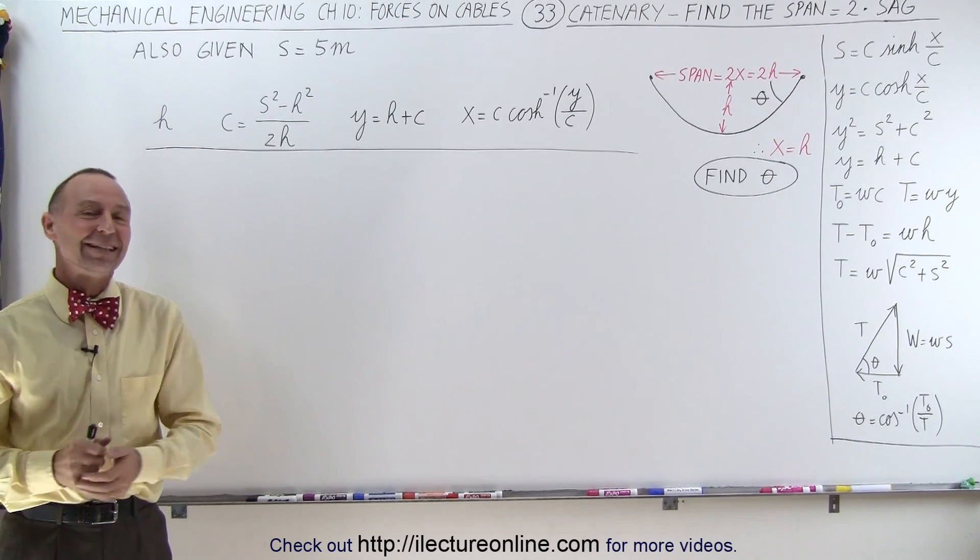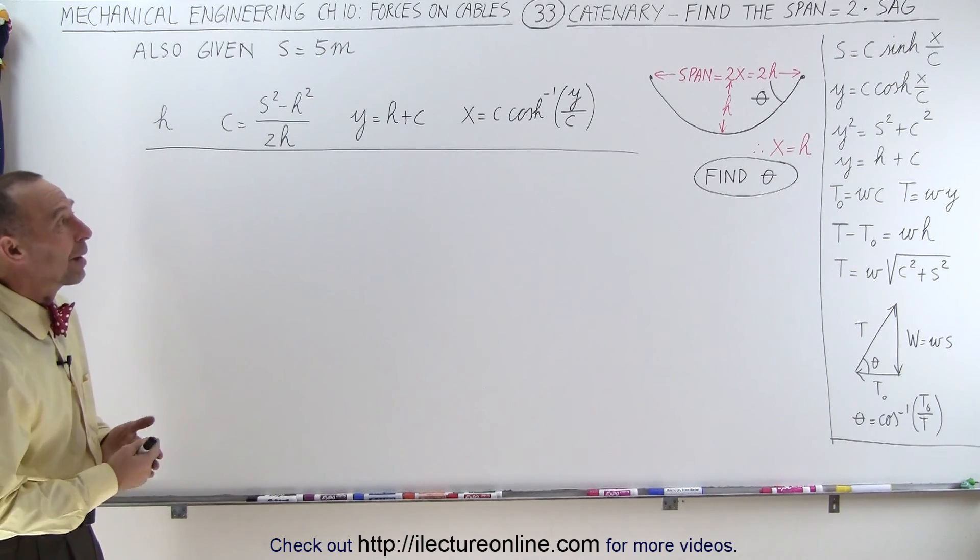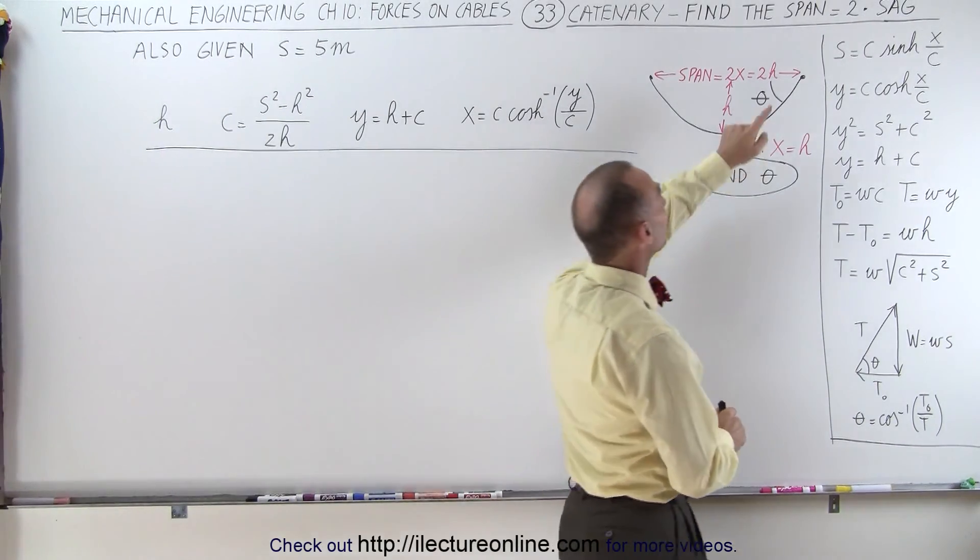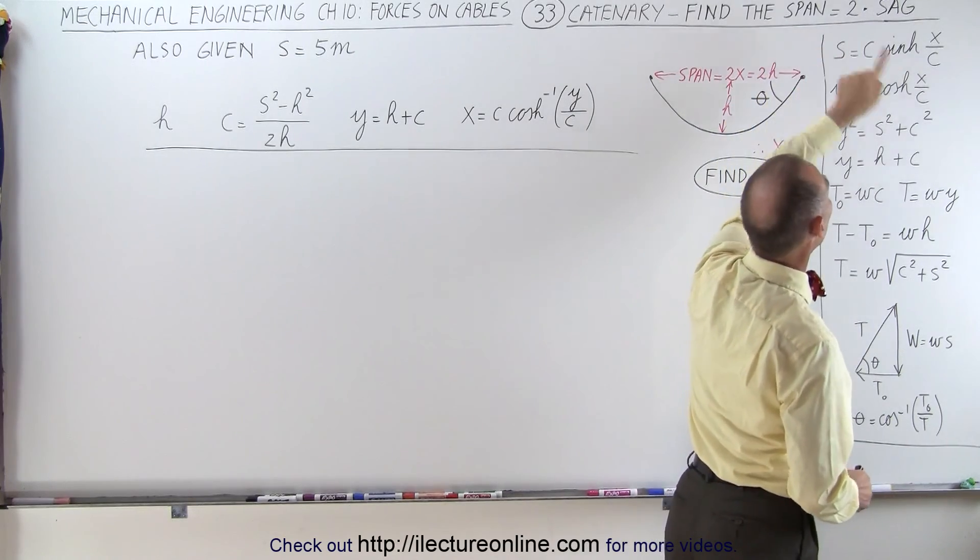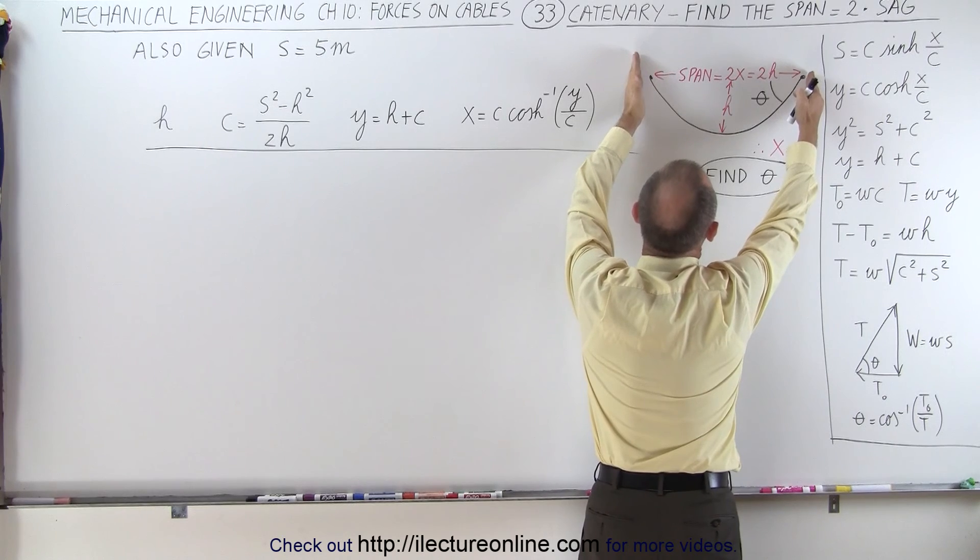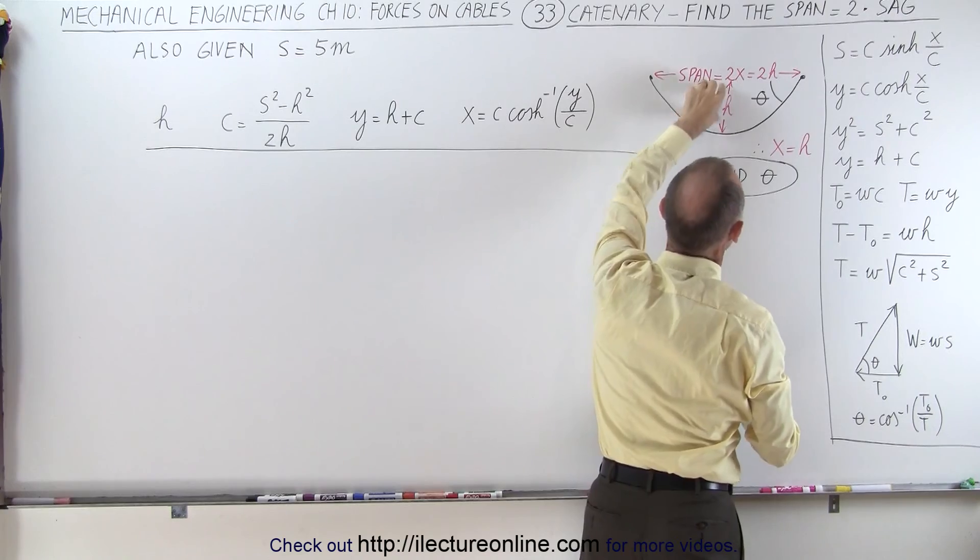Welcome to iLectronLine. The next problem we're going to solve is another catenary problem where the conditions are such that they want us to find the solution to the span being twice the sag. So the span is this distance between the attached points, the sag is this distance, they want this distance to be twice this distance.